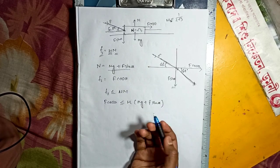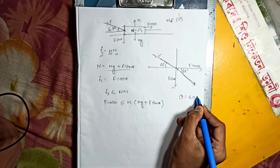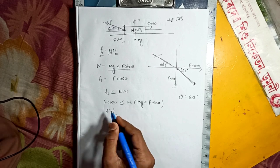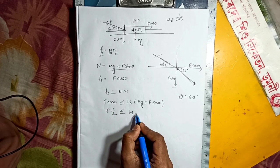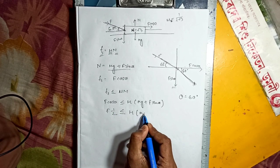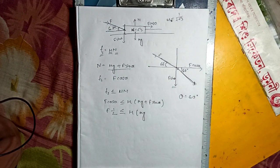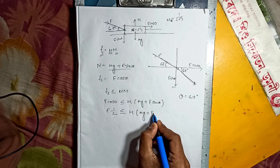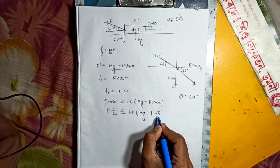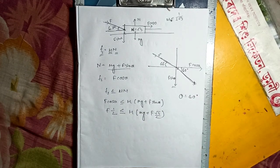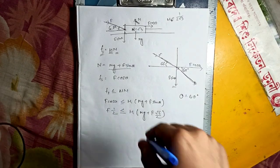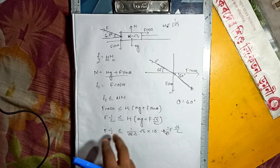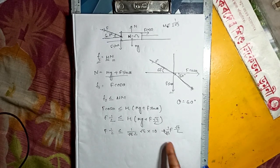So F·cosθ, where theta is 60 degrees — F·cos60 equals F into one half, since cos60 equals one half. So substituting MG and the normal force values, we simplify: Fs equals F·cosθ with theta equal to 60 degrees. After simplification, F by 2 minus F by 4 is less than or equal to 5.